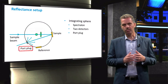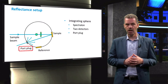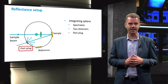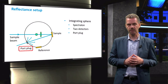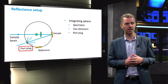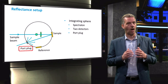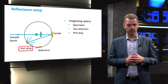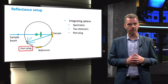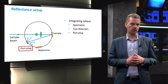When the sample beam is focused on the sample, the specular reflected light is directed towards an opening in the sphere, which can be used to remove specular reflection and measure only the diffuse reflection. When the port is closed with spectralon, the total reflection will be measured.